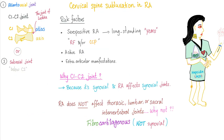Cervical spine subluxation and rheumatoid. Here is the atlantoaxial joint — C1 and C2 vertebra. The joint in between is called the joint of Luschka, named after the same person who discovered the foramen in your brain. It can also involve the subaxial joint below C2, but mostly it's C1 and C2.